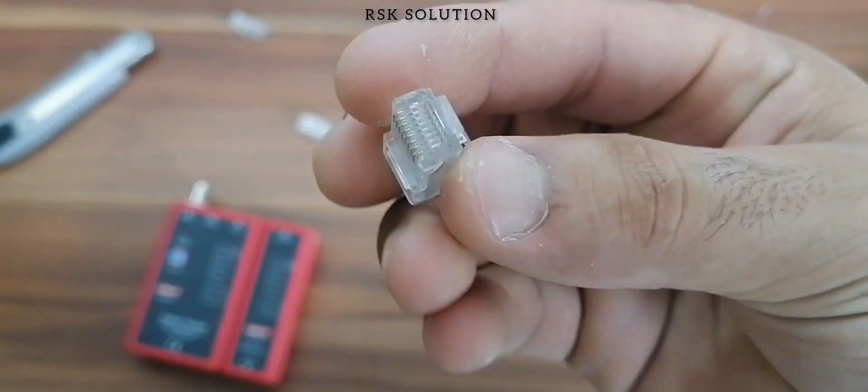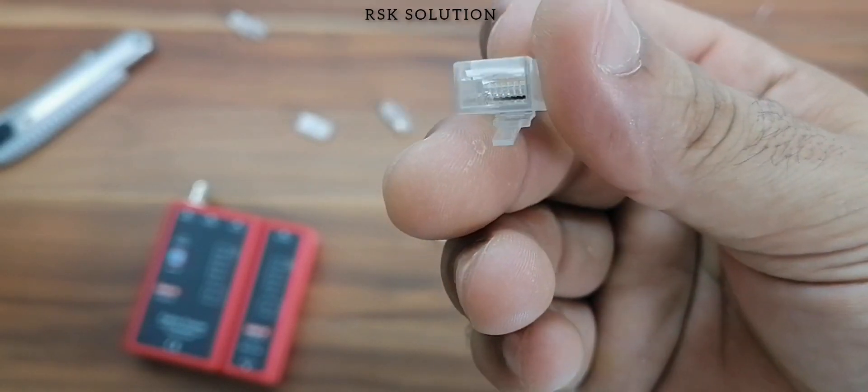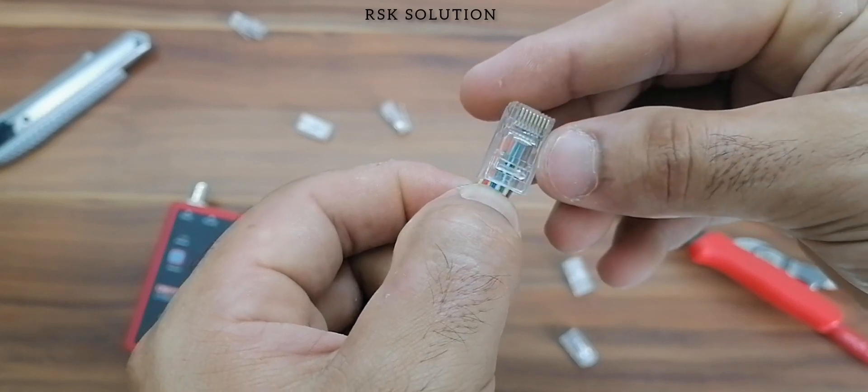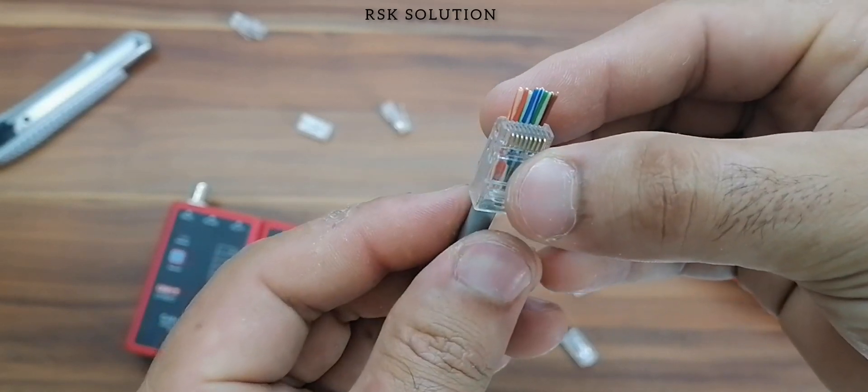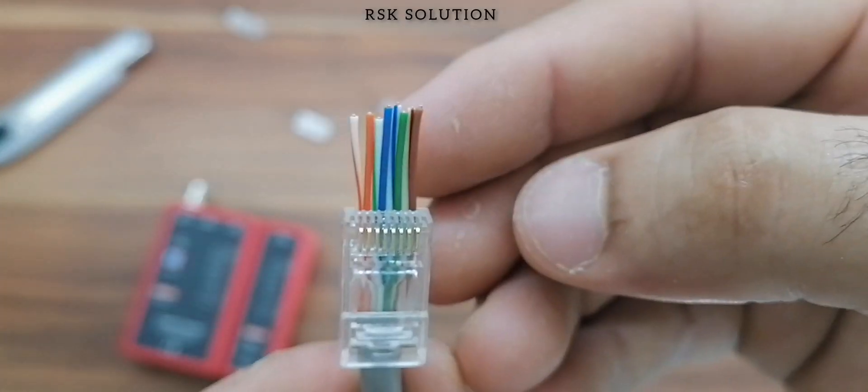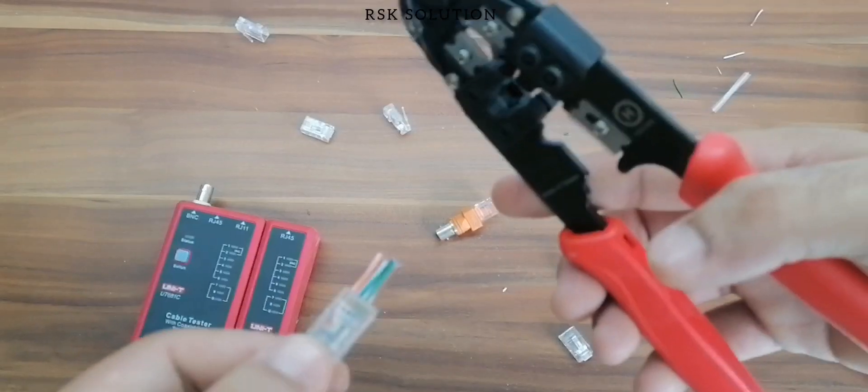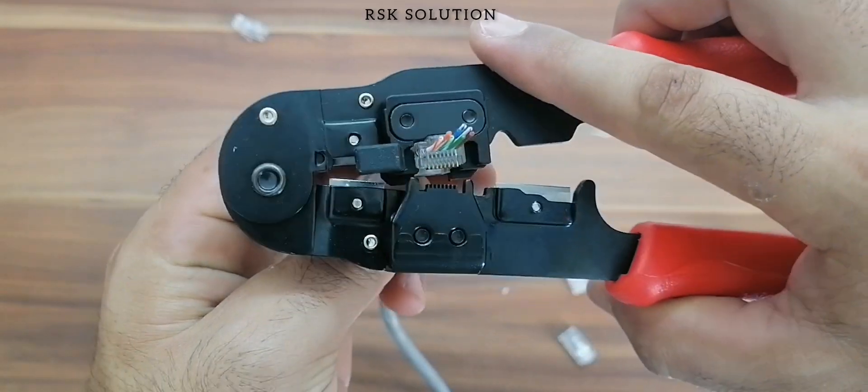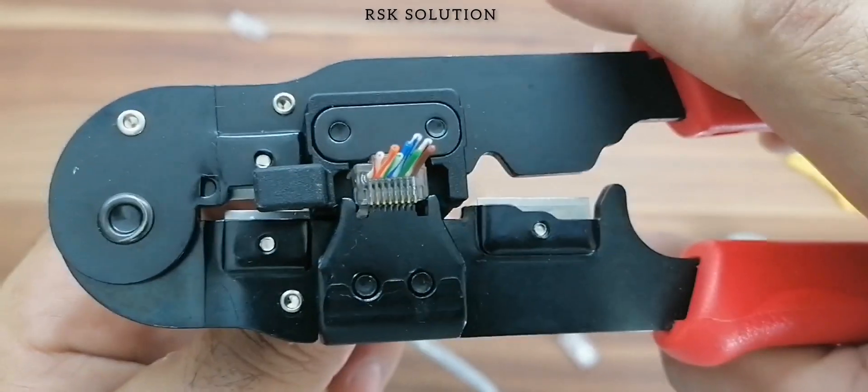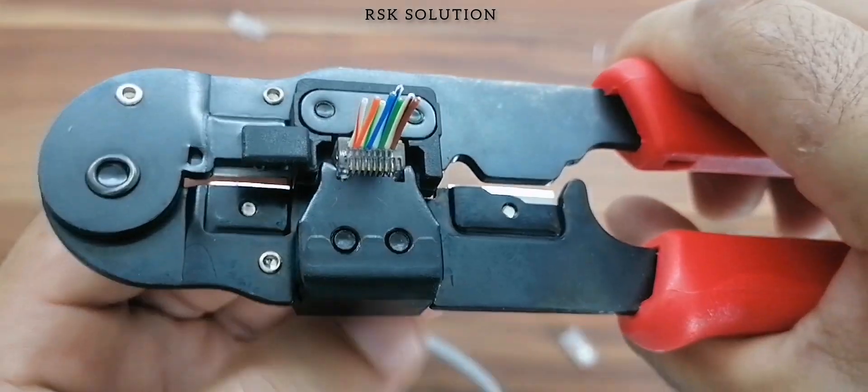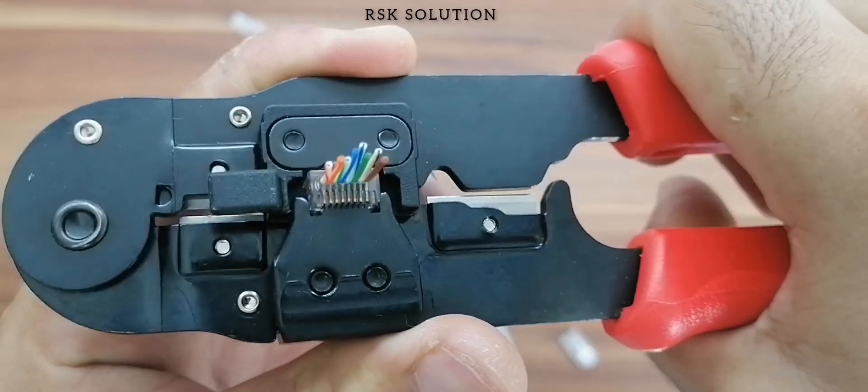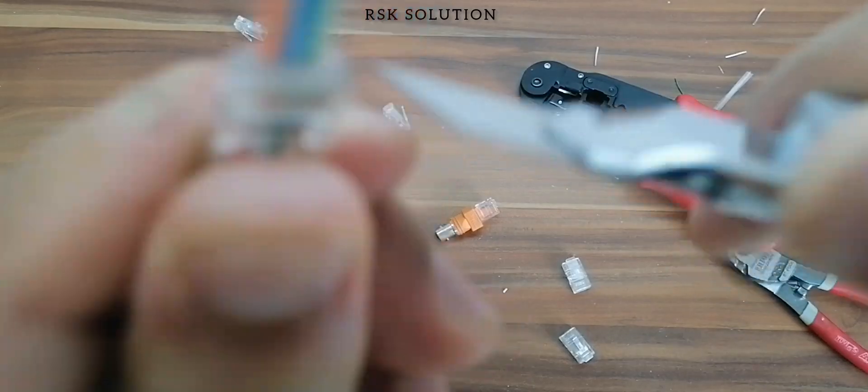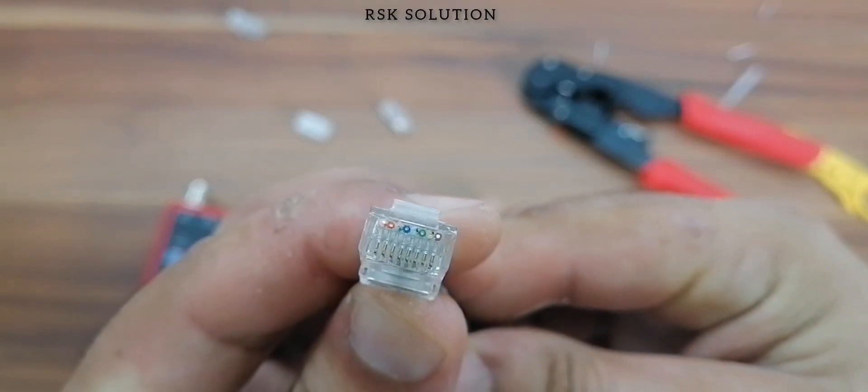This is RJ45 pass through connector. First you need to check the sequence and push them inside the wire as much as possible. Check the sequence and then you need to put inside the crimper and press them good. When you press them, make sure you press them good, otherwise the connection will not be good. Try to make it once only. Check the connection and cut the extra wire with the knife and now you can see the connection is ready.